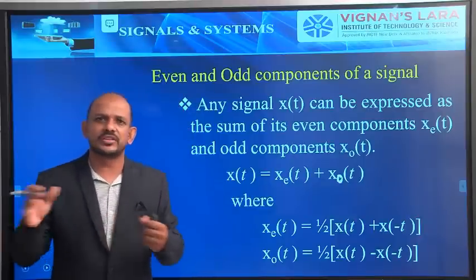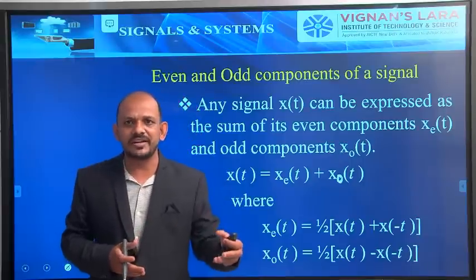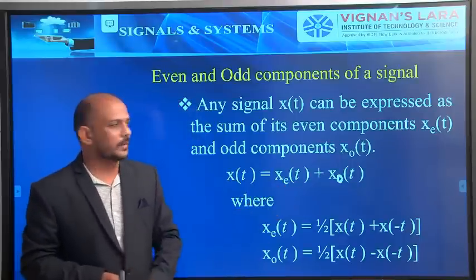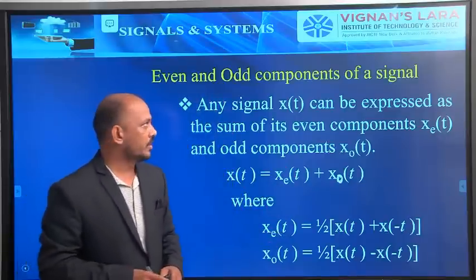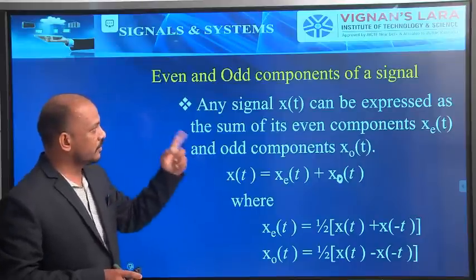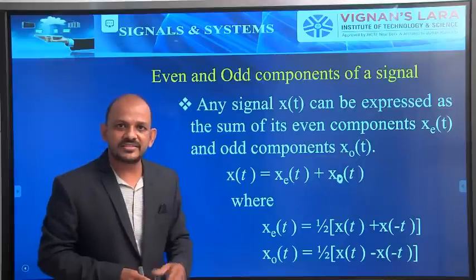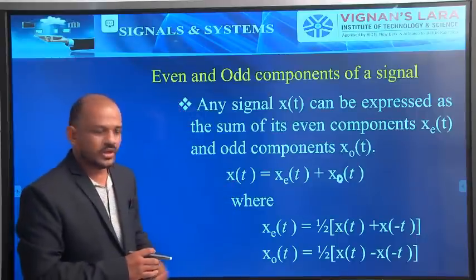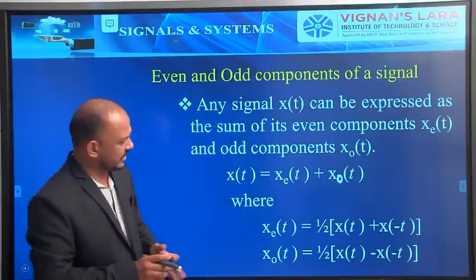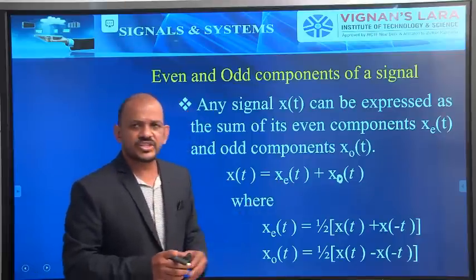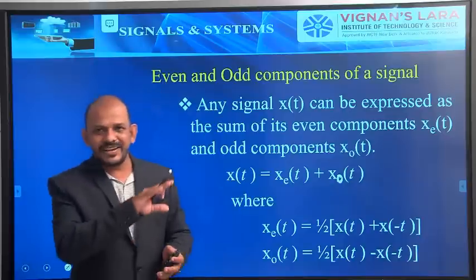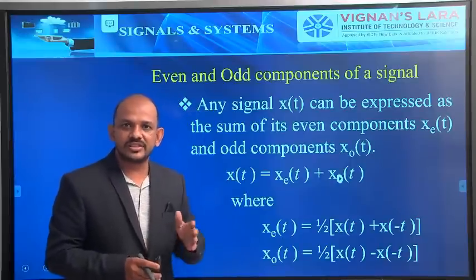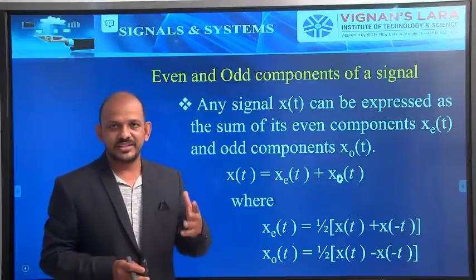Any signal x(t) can be expressed as the sum of its even components xe(t) and odd components xo(t). We have two equations to find these. The even component of a signal can be obtained from the equation xe(t) equal to one-half times x(t) plus x(-t). And the odd component xo(t) is given by one-half times x(t) minus x(-t).